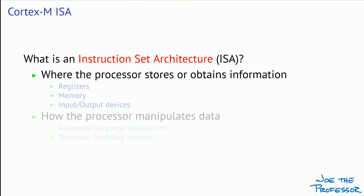First of all, it consists of those places where the processor stores or obtains information. Probably the most important of those will be the registers. A processor has many thousands of registers that are not visible to the programmer, but when we talk about registers as part of the ISA, we mean those registers available for use as scratchpad or short-term memory. These registers are physically located very close to the processor's ALU, designed to be very fast at the expense of more power and more transistors.